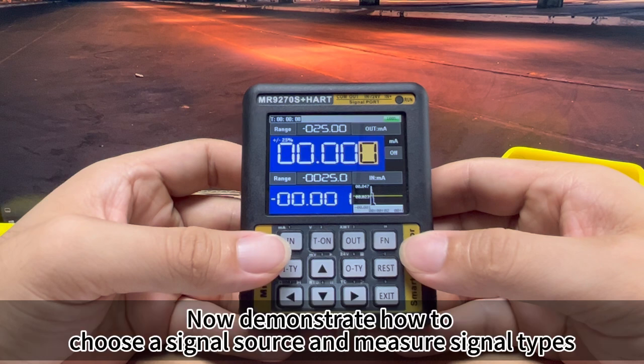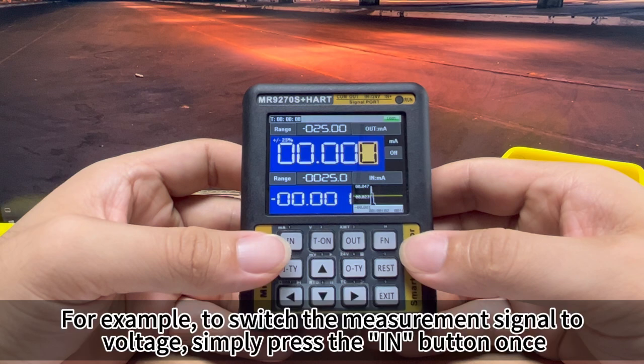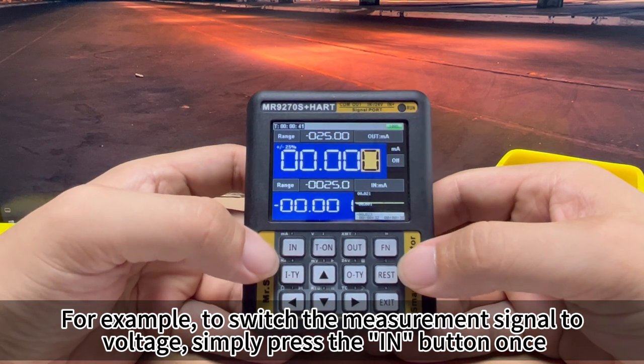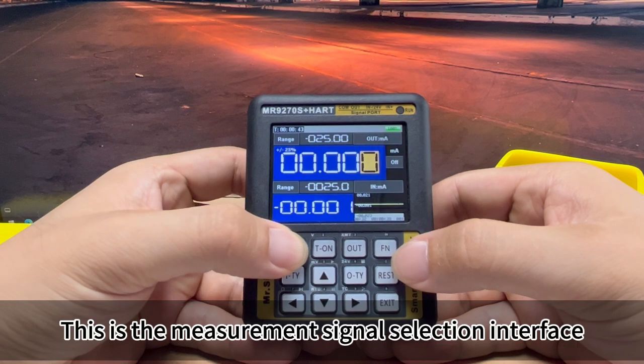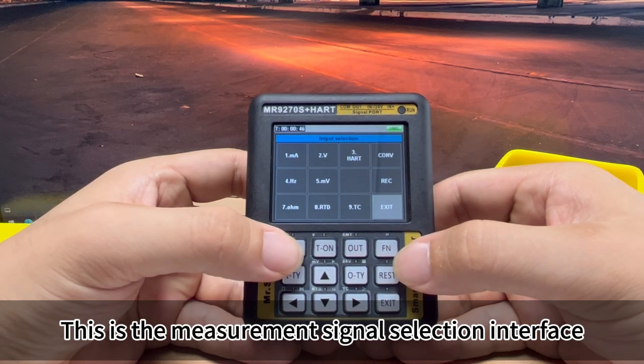Now demonstrate how to choose a signal source and measure signal types. For example, to switch the measurement signal to voltage, simply press the in button once. This is the measurement signal selection interface.